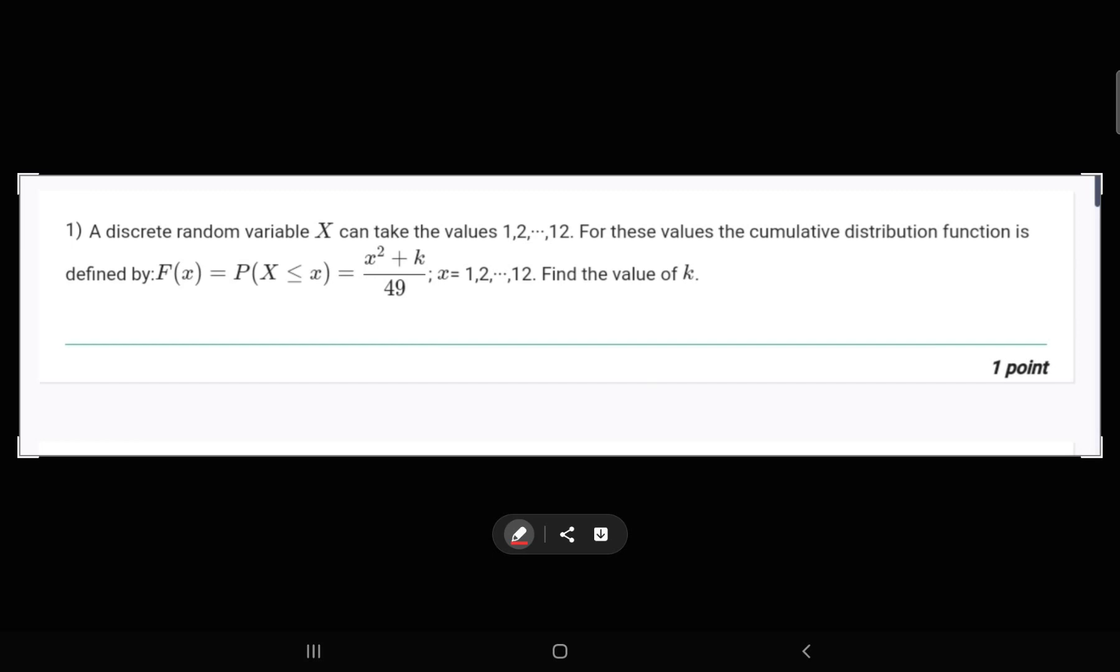A discrete random variable x can take values 1 to 12. For these values, the cumulative distribution function is defined by F(x) = P(X ≤ x) = (x² + k)/49, where the variable x can take the values 1 to 12. Find the value of k.